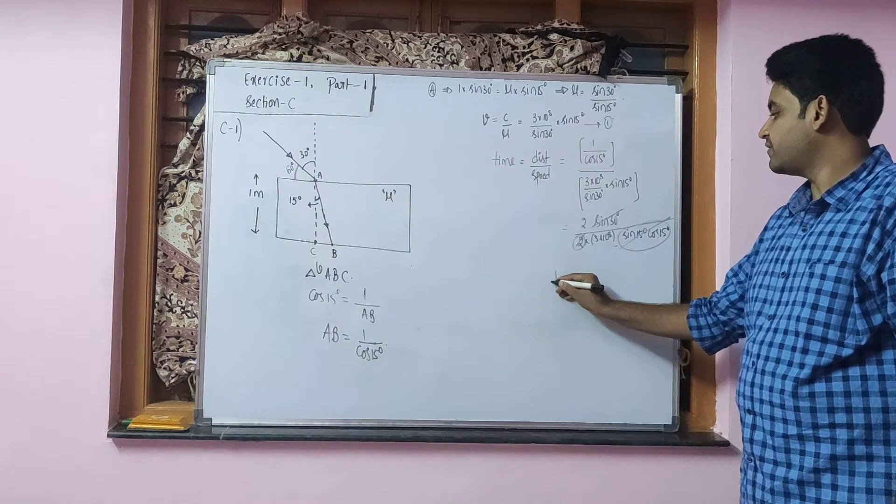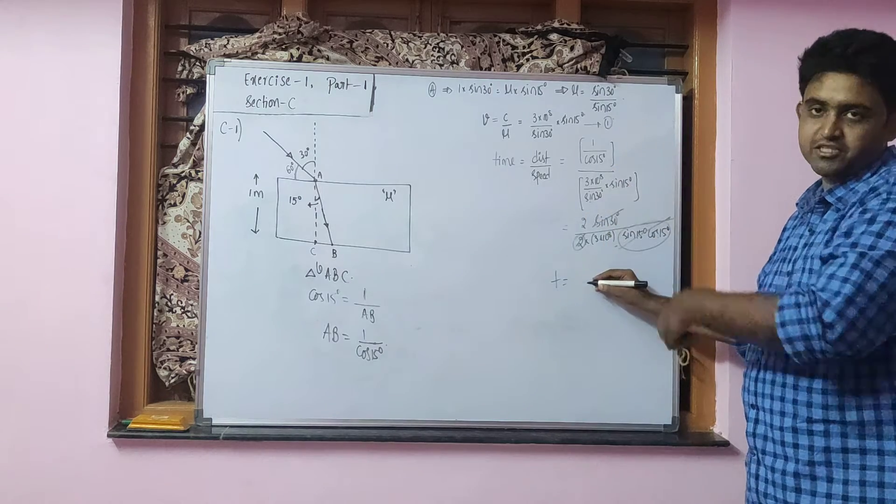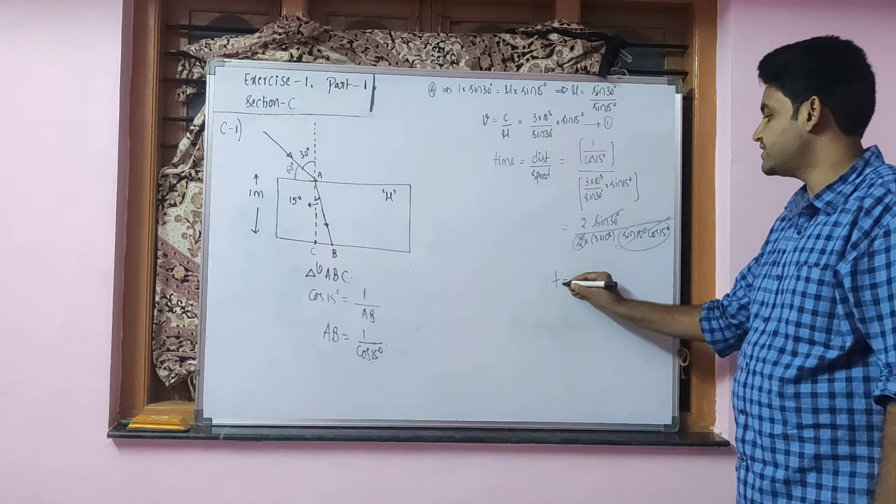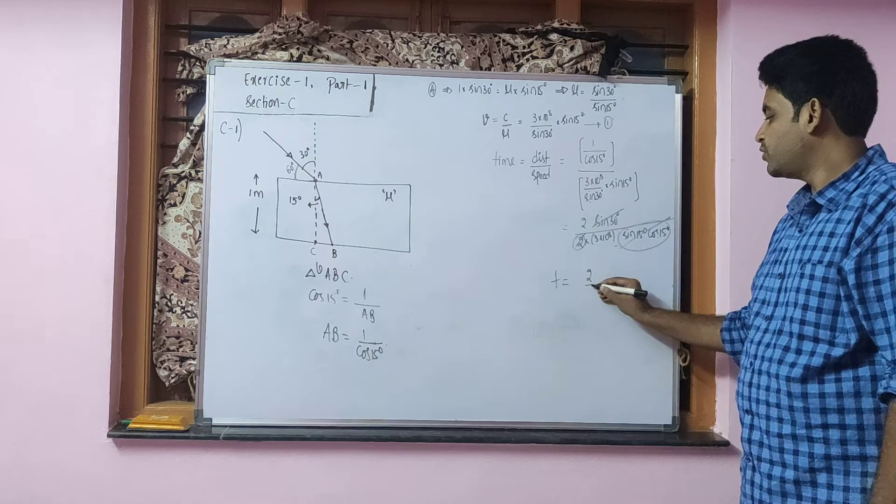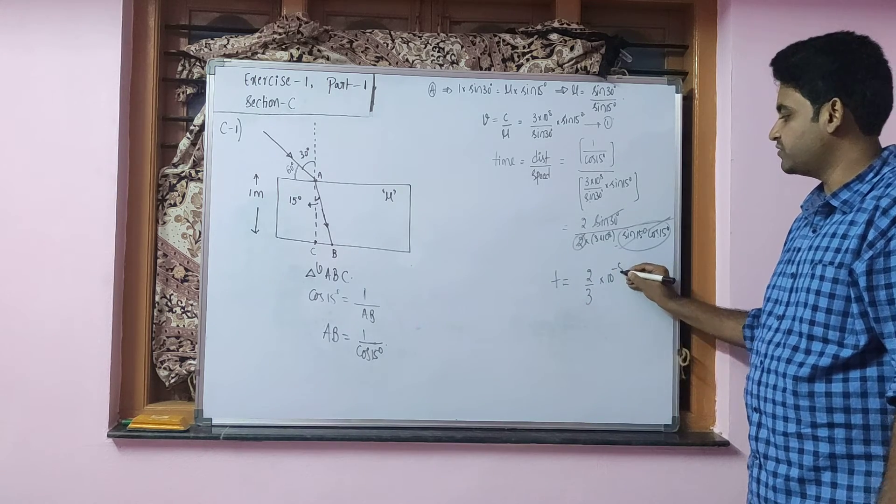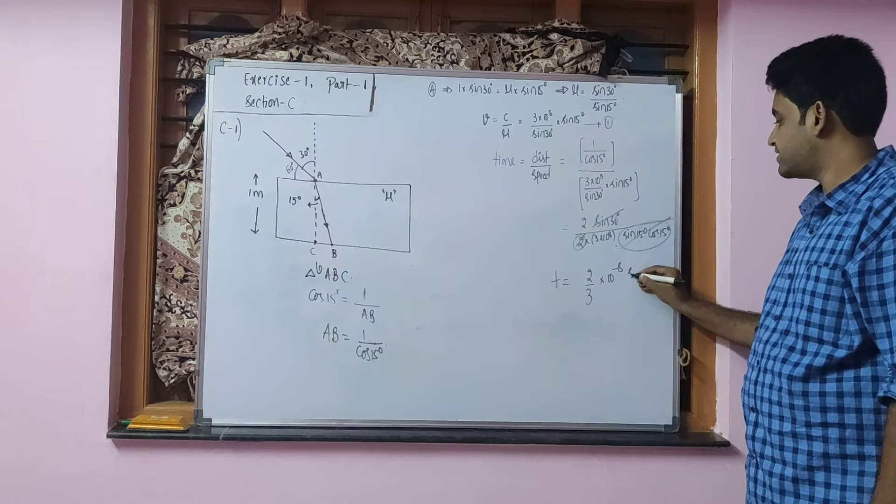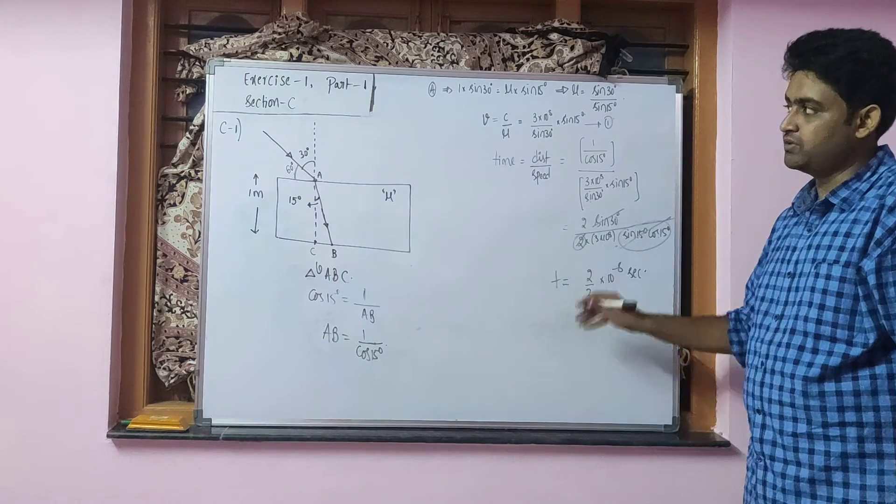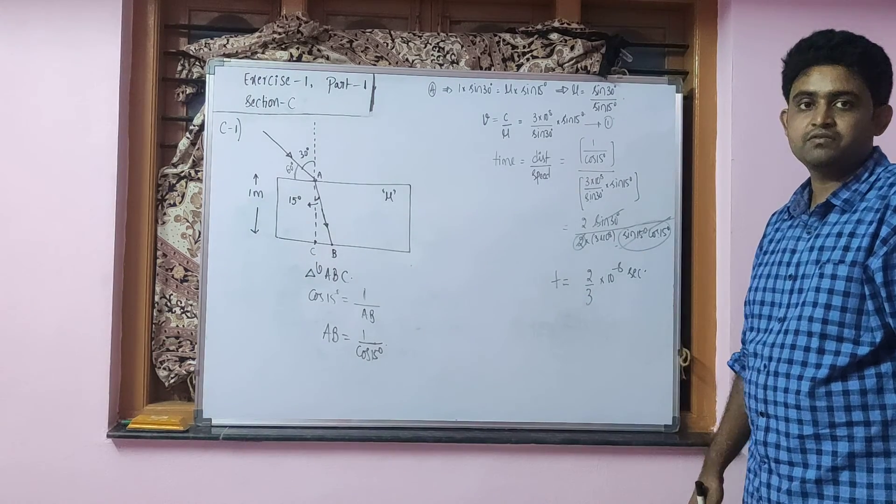So the total time taken for the light ray to emerge out of the slab will be equals to 2 by 3 into 10 power 8. The 10 power 8 I am taking to the numerator so it will become 10 power minus 8 seconds. This will be the solution for this question. We will go into the next one. Thank you.